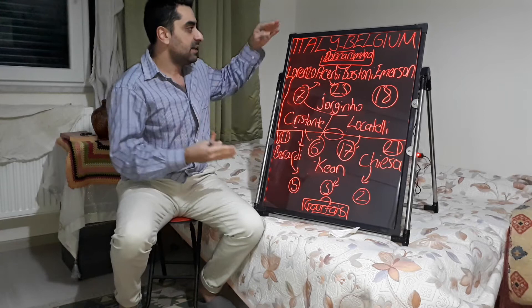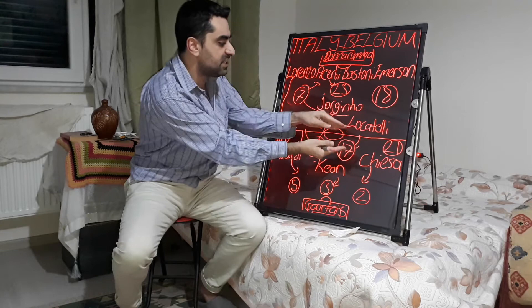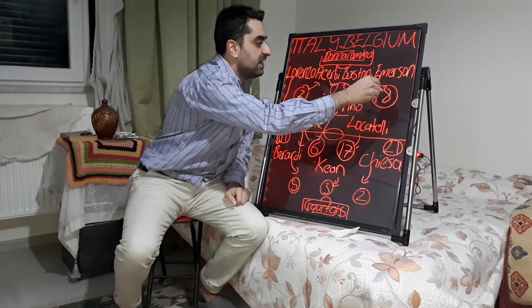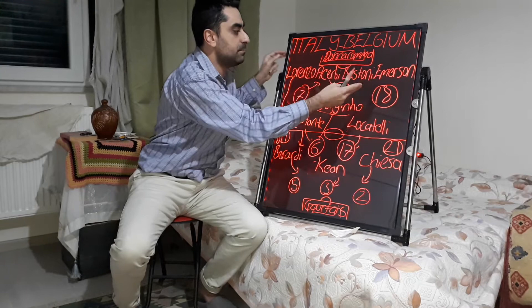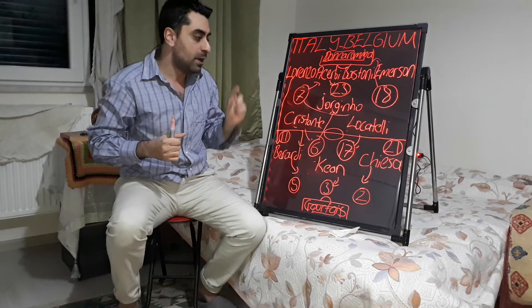After that, Belgium found one goal through a developing counter-attack. De Bruyne came back to midfield, received the ball, and carried it forward quickly. Young player Ketalaere made a run behind the Italian defence line, behind Bastoni and Emerson. With De Bruyne's pass between the Italian defence line, Ketalaere met the ball and scored for Belgium, making the score 2-1.